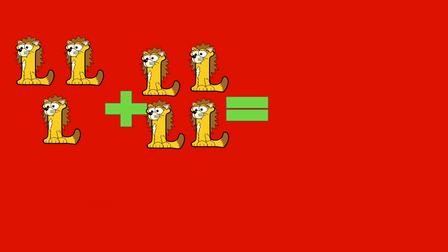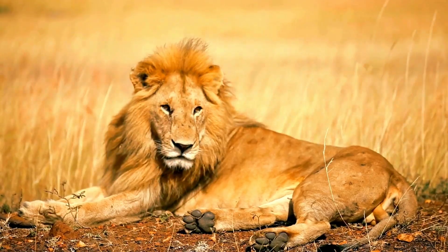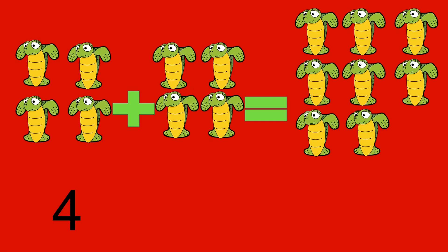Three lions plus four lions equals seven lions. Three plus four equals seven. Lion.